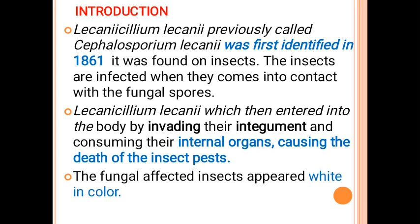First, Verticillium lecanii. It is also called Lecanicillium lecanii, and it is one of the most important entomopathogenic fungi used to control whiteflies, thrips, aphids, mealybugs, and other sucking pests. Entomopathogenic fungi are microorganisms that specifically infect and often kill insects and pests.